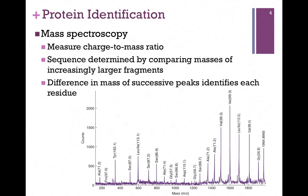What we get from computer analysis is a printout that would look something like this at the bottom of the slide. The instrument measures the charge-to-mass ratio, and we're going to determine the sequence by comparing the masses of increasingly larger fragments that differ by one amino acid. So the difference in mass of successive peaks identifies each of the residues.